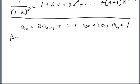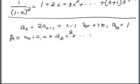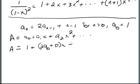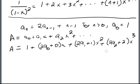We let capital A be the generating function of the a_n that satisfies this recurrence relation. So A equals a_0 plus a_1 x plus a_2 x squared plus dot dot dot. We can rewrite A by plugging in what we know from the recurrence: a_0 is 1, so we get 1 plus, then a_1 equals 2 times a_0 plus 0 times x, then a_2 equals 2a_1 plus 1, giving x squared, then 2a_2 plus 2 times x cubed, and so on.